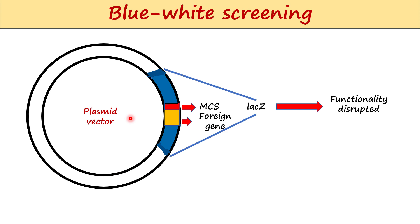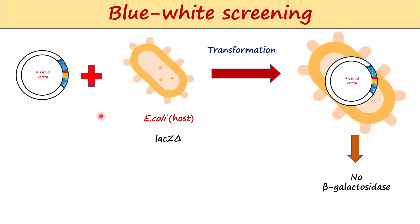The plasmid vectors used in these experiments contain the MCS within the lac Z sequence, so the foreign DNA can be inserted in the MCS region. Whenever the foreign DNA gets inserted into the lac Z gene, the functionality of this lac Z gene is disrupted. In this case, when this plasmid vector is taken up by the host E. coli, the functional beta-galactosidase enzyme is not produced.